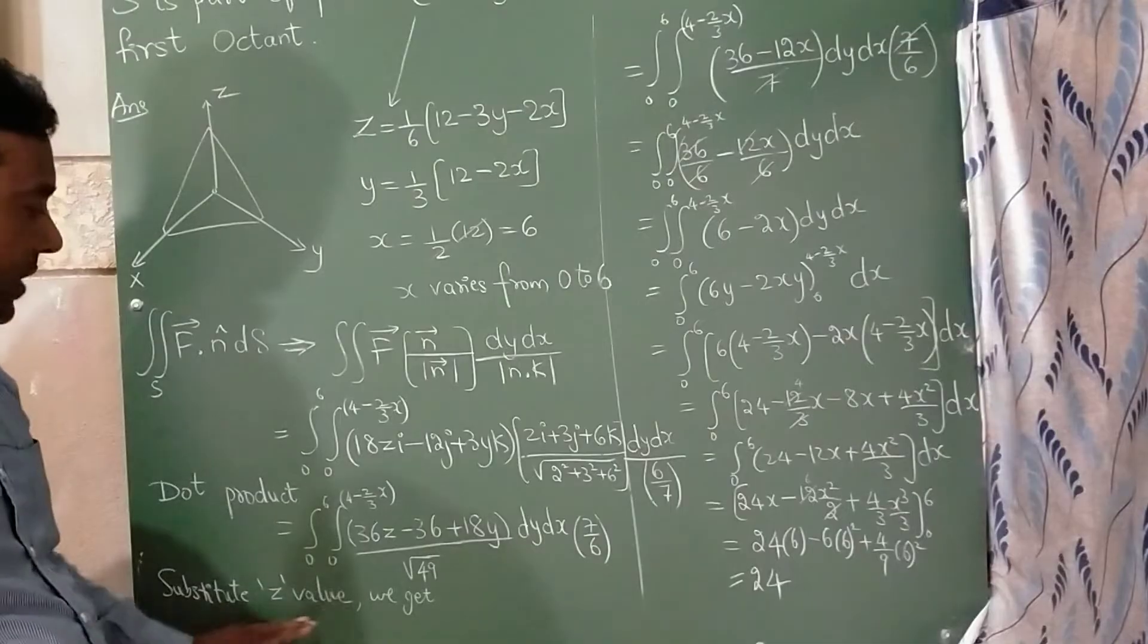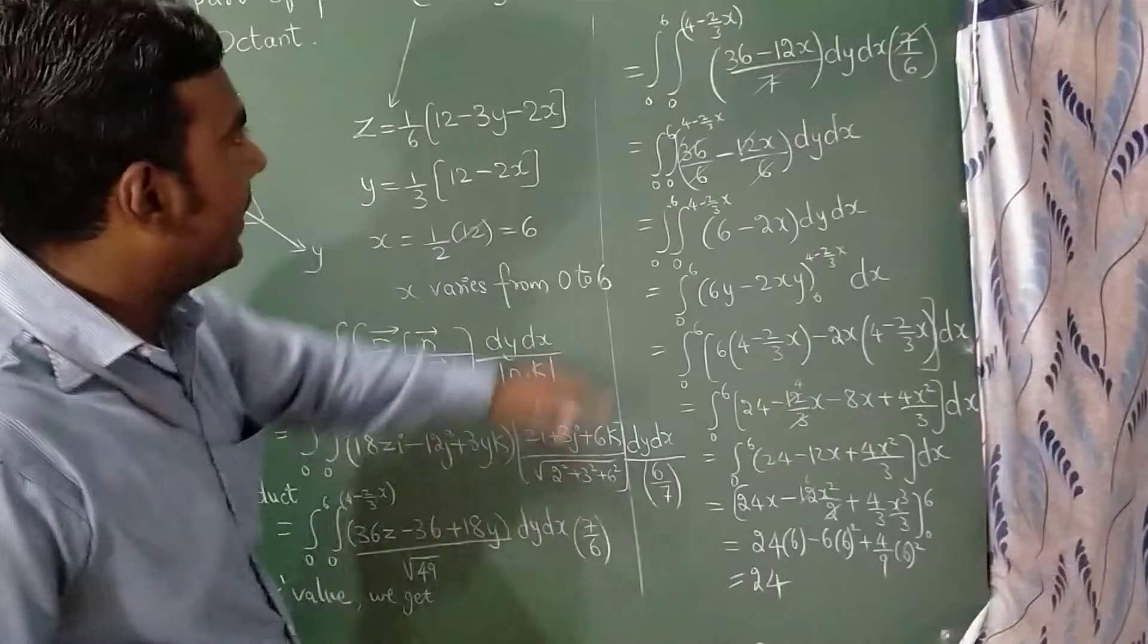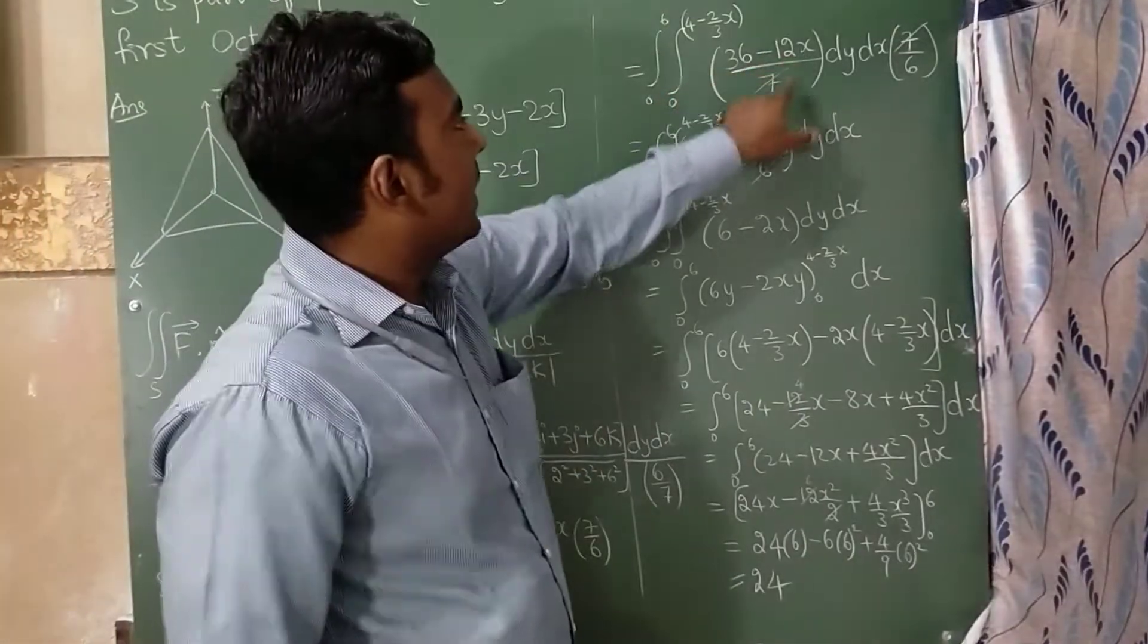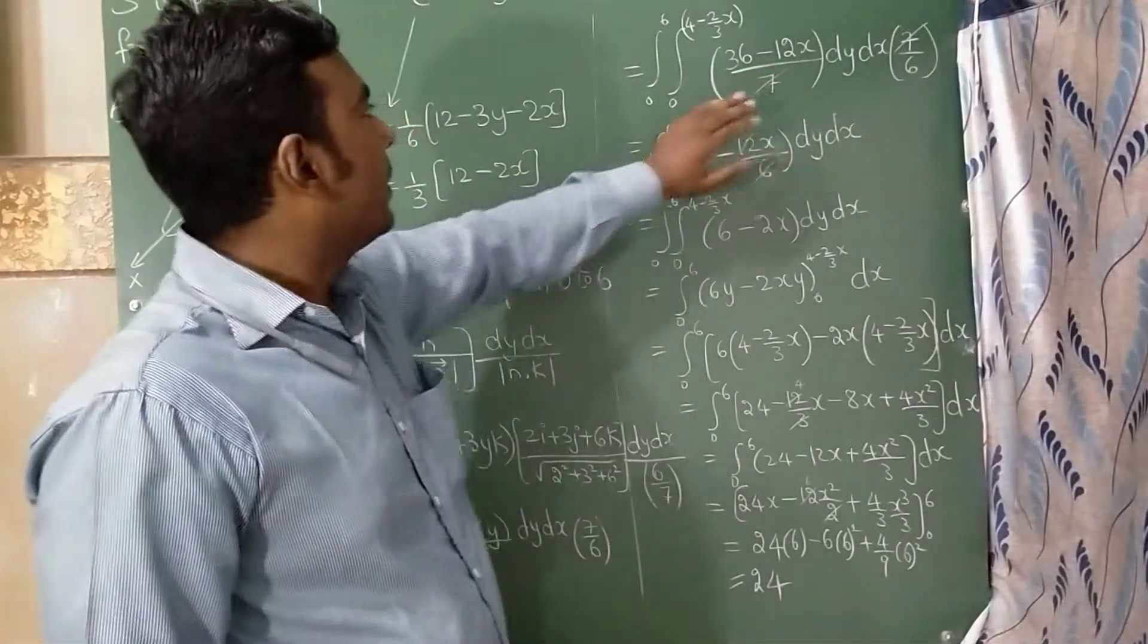If I substitute this z value, this one, I will get 36 minus 12x divided by 7. After substituting I have got this. So I have written little direct.